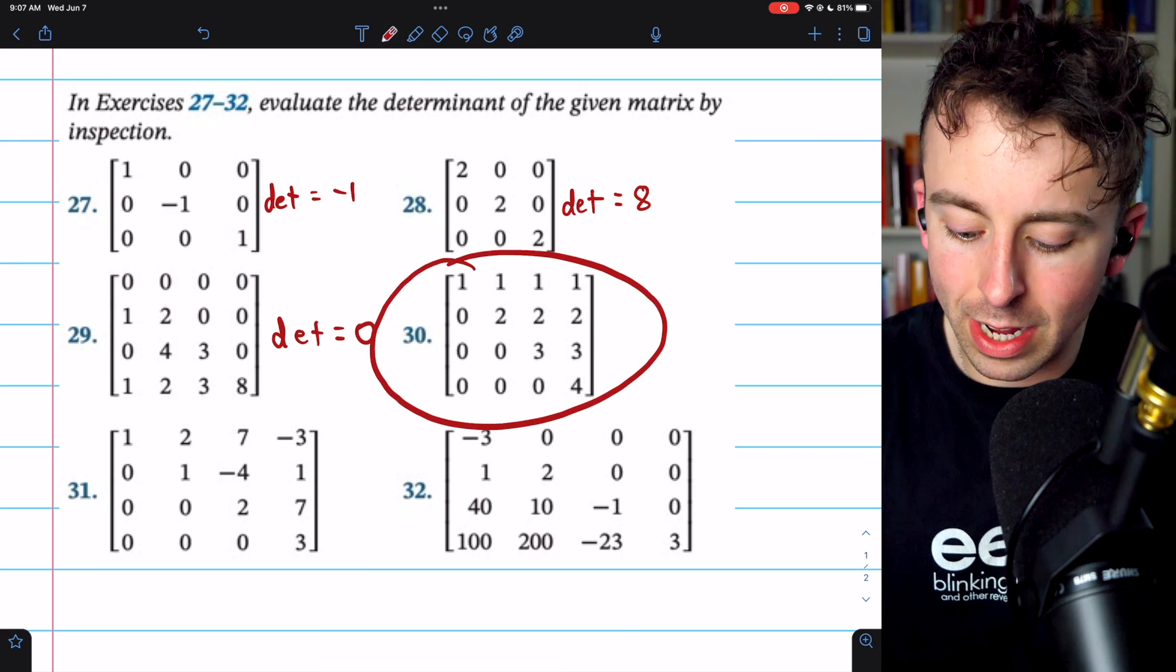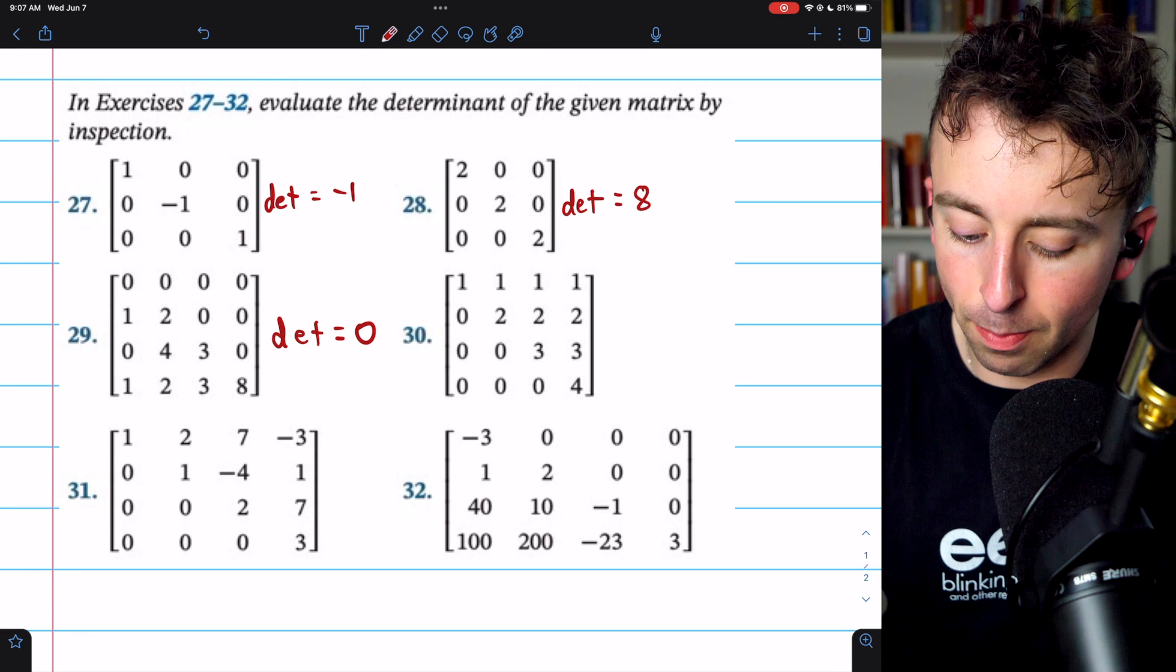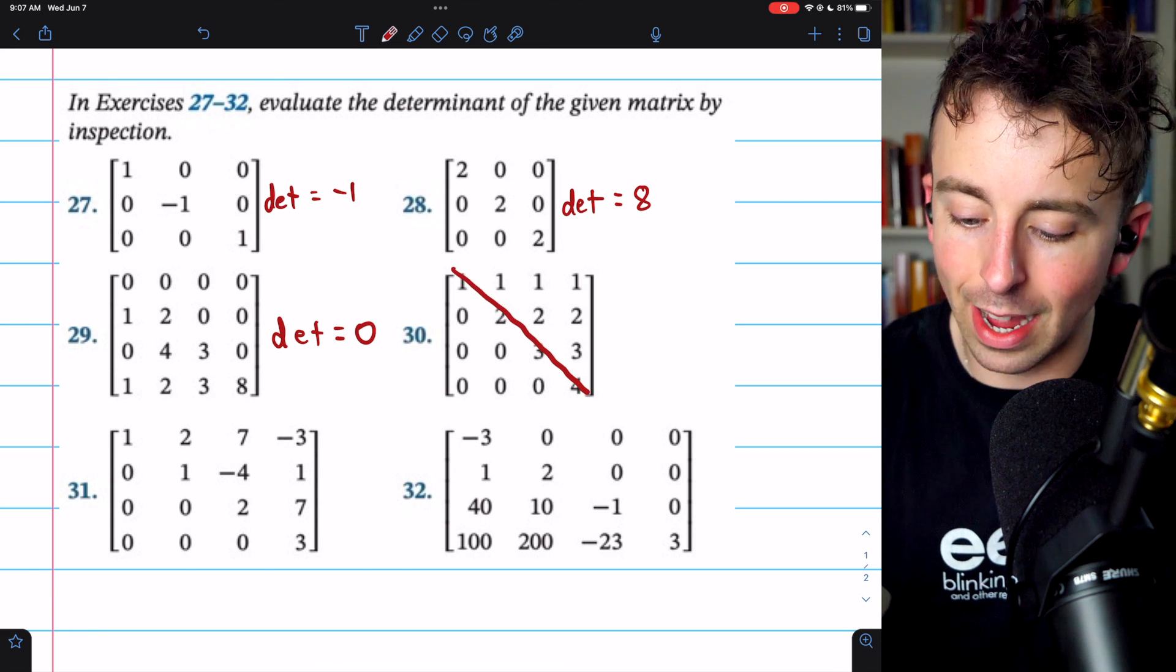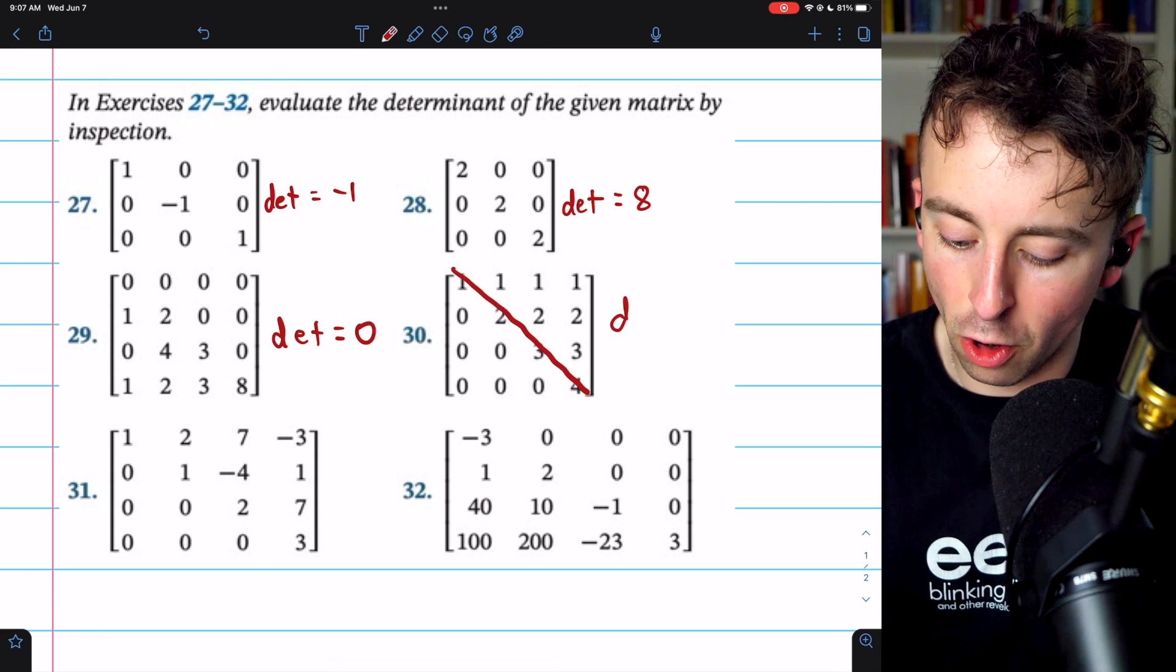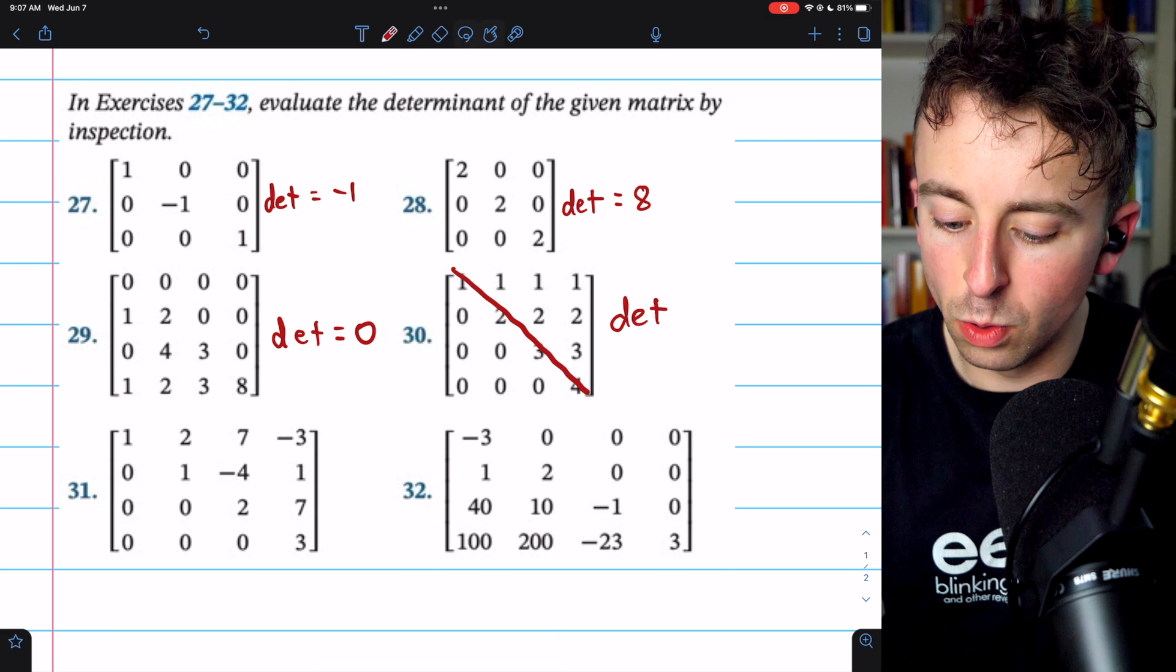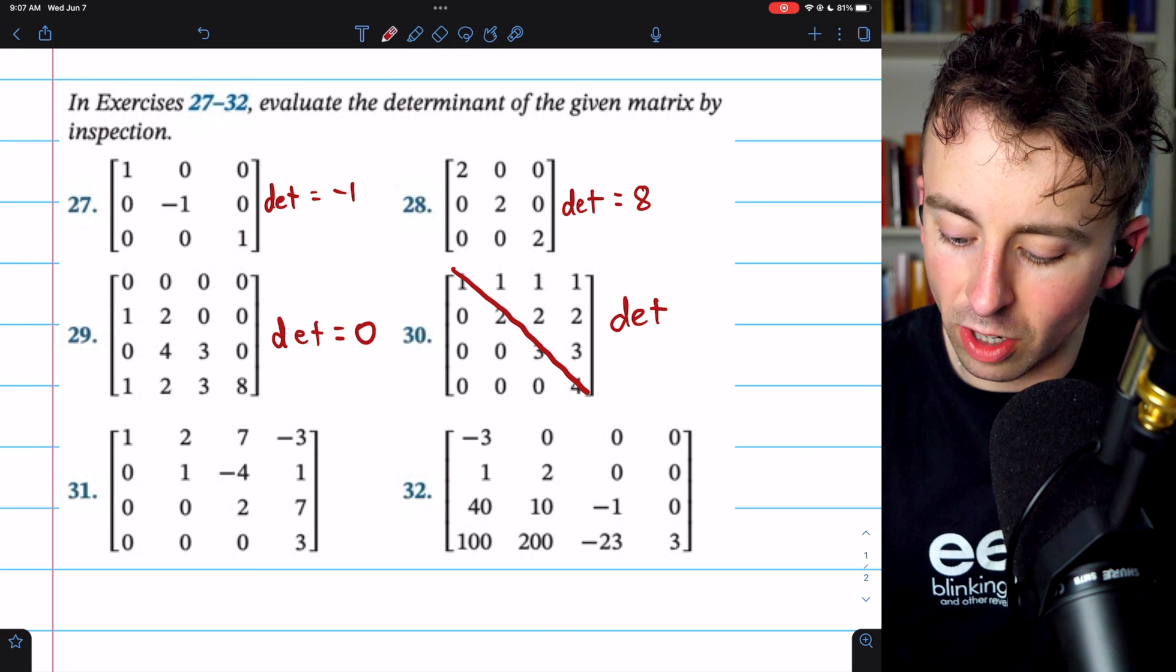Here is problem 30. This is an upper triangular matrix. Multiply across the main diagonal in order to find the determinant. That's going to be 1 times 2 times 3 times 4, which is 24.